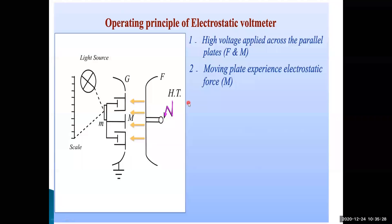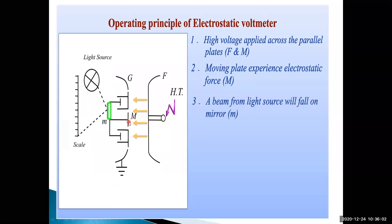Because of the high voltages applied, the moving plate experiences electrostatic force. When high voltage is applied to the fixed plate, there is attraction between the two plates - the moving plate moves closer to the fixed plate due to attraction. Due to repulsion, the moving plate moves away from the fixed plate. These are two types of forces: attraction and repulsion.